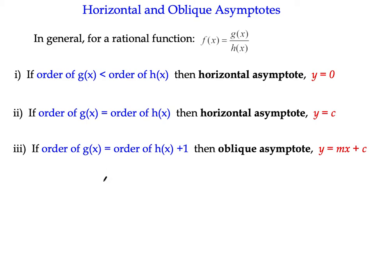The screen here tells us a bit of a condition that we need to look for. So for any rational function, f of x is equal to g of x over h of x - we've got polynomial expressions on numerator and denominator. We're looking for the order of both of these polynomials, in other words what's the highest power of x in both cases.